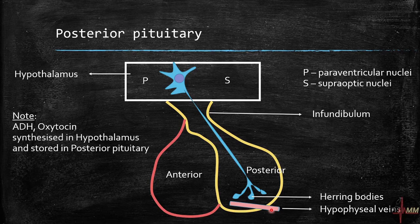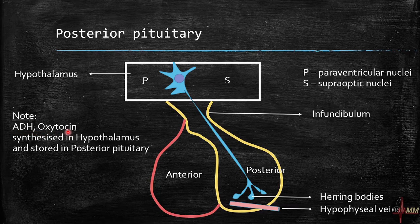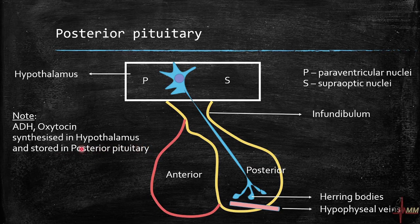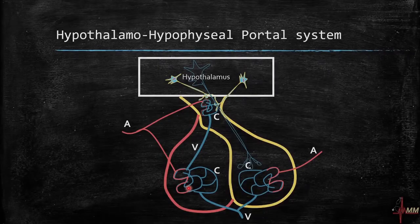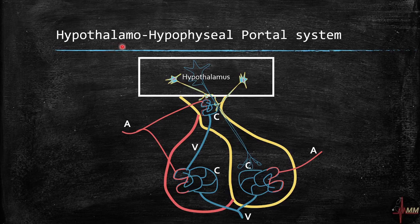The two important hormones secreted from the posterior pituitary are antidiuretic hormone (ADH) and oxytocin. These are synthesized in the hypothalamus and stored in the posterior pituitary. It is very important to note that ADH and oxytocin are not synthesized in the posterior pituitary — they are only stored there.